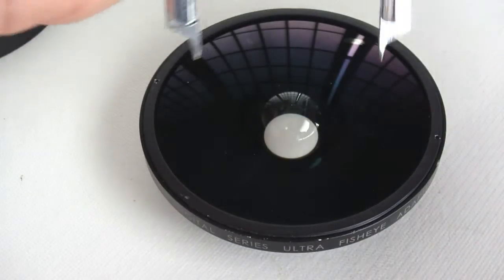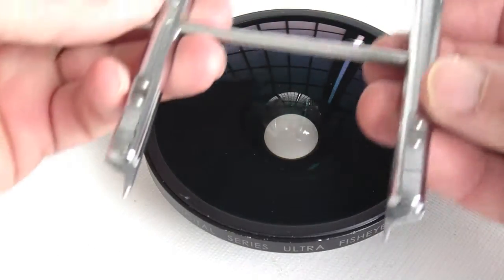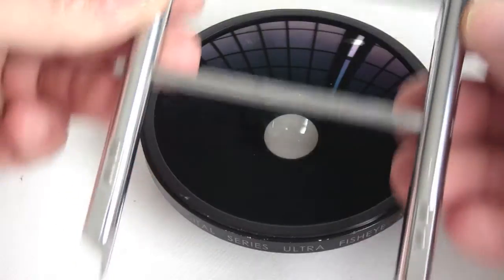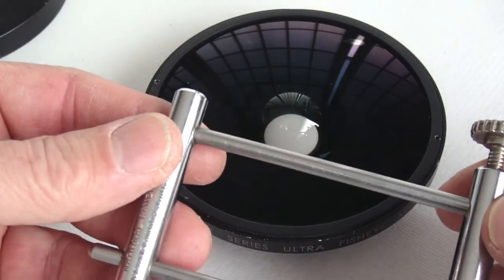A standard adjustable spanner wrench will not accommodate the wide expanse of the contact points of the Schneider fisheye lens. This creates a problem in removing the front lens element.